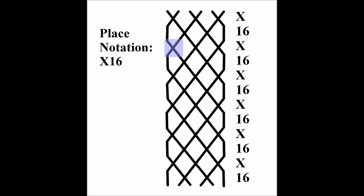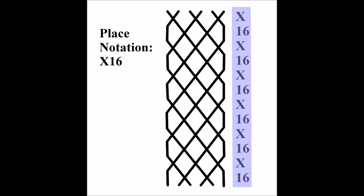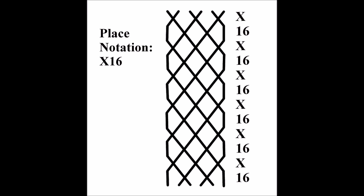Looking at the next change, the first pair cross, the second pair cross and the third pair cross — so this is another cross. The next change is the same as the second: a one six. If we were to carry on in this way through the whole diagram, you'd find that in plain hunt there are only these two types of changes and we alternate between them: cross one six, cross one six. The entire pattern can be described simply by saying cross one six. You can see how place notation is a very concise way of describing what happens.